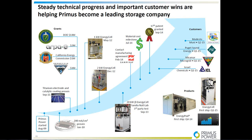We have three demonstrations and one commercial sale. The commercial sale is to Israel Chemicals for a behind-the-meter deployment of a single energy cell to manage demand. The three demonstration projects are: the microgrid with Raytheon at Miramar, and the two utility projects with Modesto Irrigation District and Puget Sound Energy.